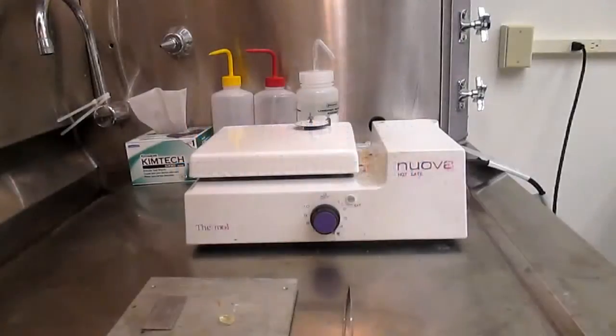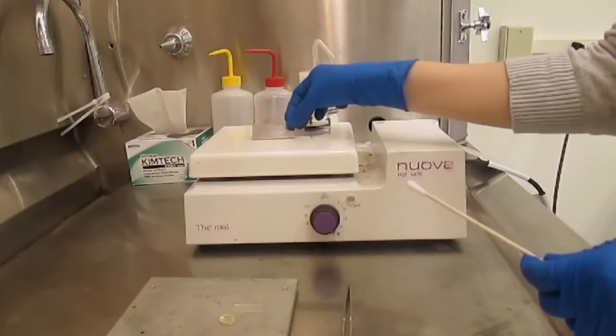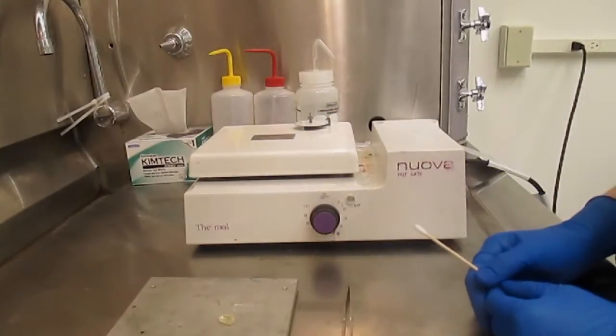Mounting the bulk material for cutting. Place the aluminum specimen plate on a hot plate heated to approximately 120 degrees Celsius to melt the crystal bond adhesive.